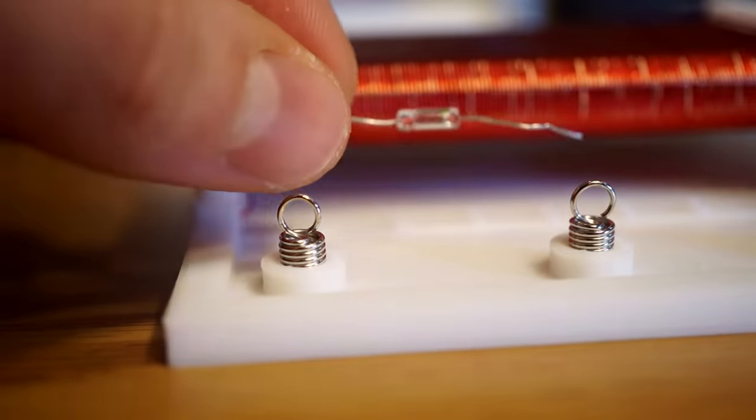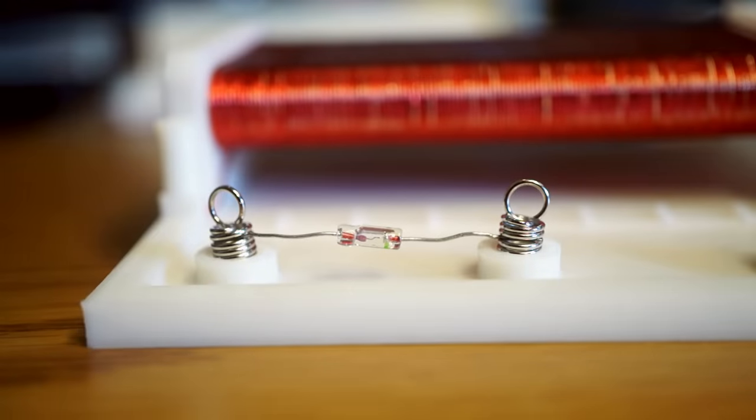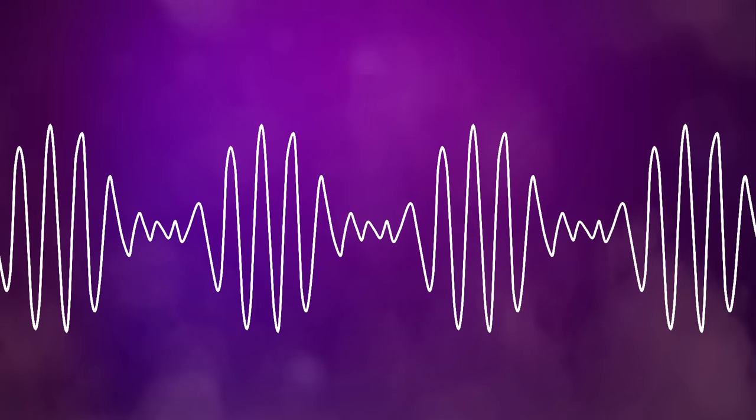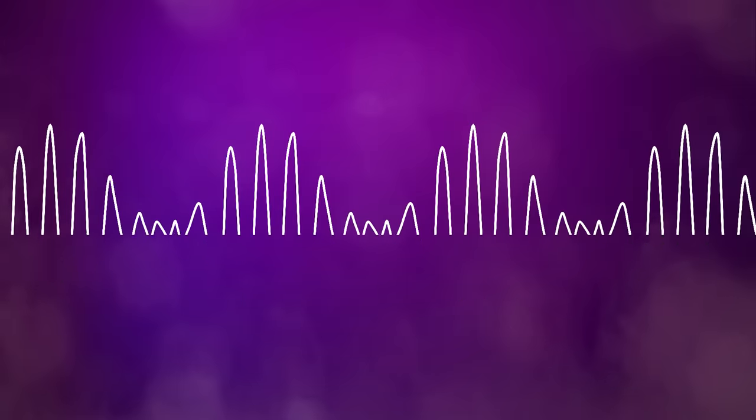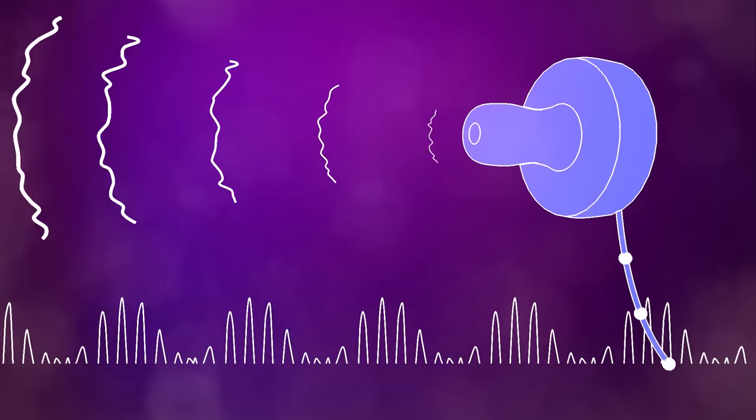This is a diode. What it does is only allow current to travel in one direction. This is perfect, since the radio signals are sent in alternating current. This diode will cut the wave in half, creating a pulsating direct current that will vibrate the speaker to produce sound.